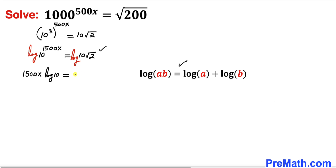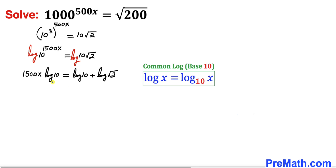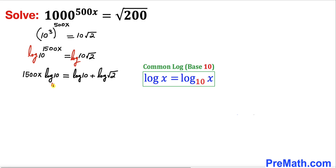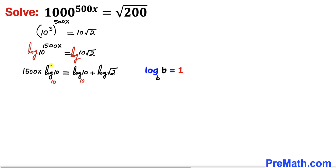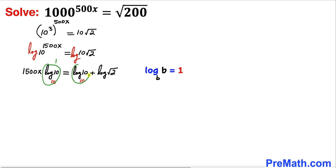Applying the product rule on the right hand side, it becomes log of 10 plus log of square root of 2. These are common logs with base 10 by default. Since the argument and base are the same, log base 10 of 10 equals 1. So we can write 1500x times 1 equals 1 plus log of square root of 2.